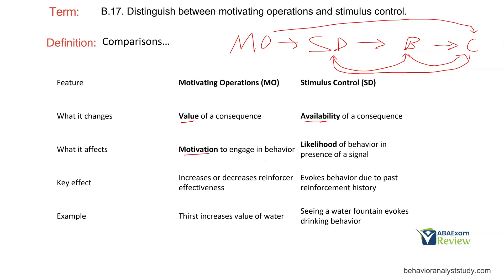Motivating operations affect motivation to engage in behavior — are you going to want to or not want to? The SD or stimulus control increases the likelihood. You might have motivation, but if it's not available, you're not going to engage in the behavior. The key effect is that motivating operations increase or decrease reinforcer effectiveness, while stimulus control evokes behavior due to past reinforcement history. For example, thirst increases the value of water, but not until we see an SD signaling water is available can we actually get that water. When we see a water fountain — that's the SD — it evokes drinking behavior, and we get water. Thirst is our MO and it increased the value of water.